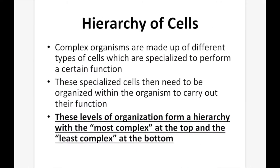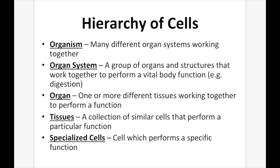Hierarchy of cells. Complex organisms are made up of different types of cells which are specialized to perform a certain function. These specialized cells then need to be organized within the organism to carry out their function. These levels of organization form a hierarchy with the most complex at the top and the least complex at the bottom, and that's what we're showing here.